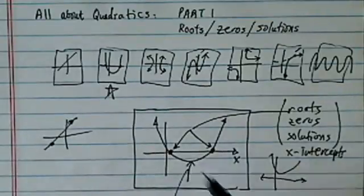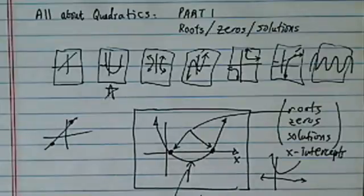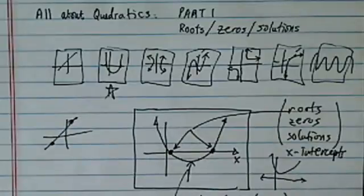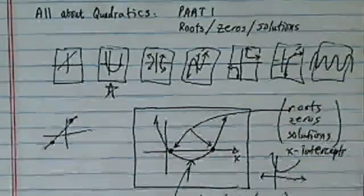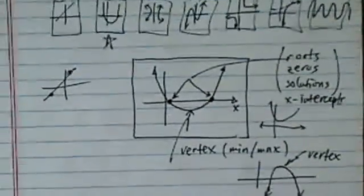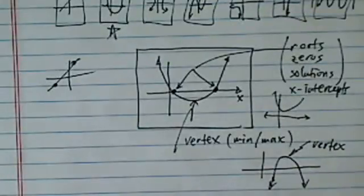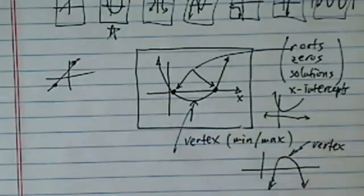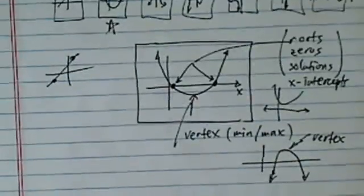Another point that's very important is the vertex. The vertex gives you the minimum value, or sometimes the maximum value if the curve is concave down, upside down. The big picture is: what's really important for quadratics is finding the roots and the vertex. For the next few minutes, let's talk about how we find them.